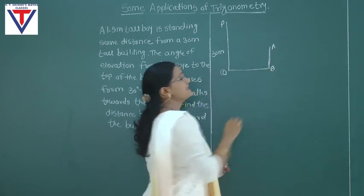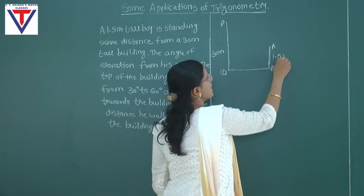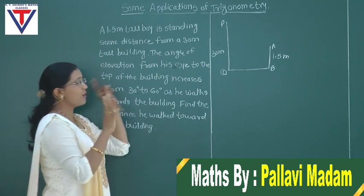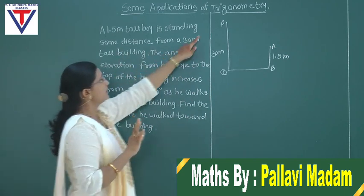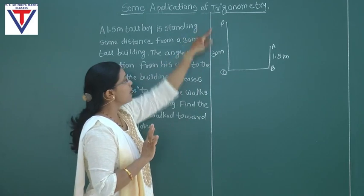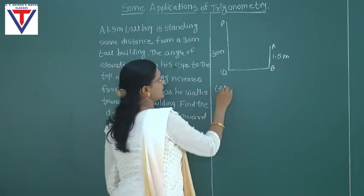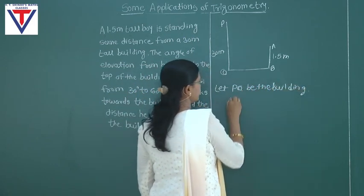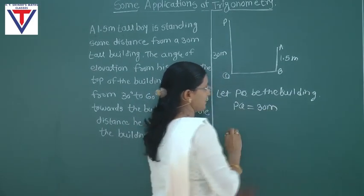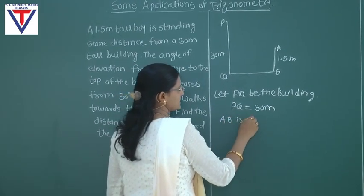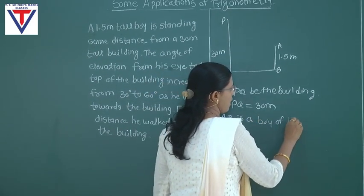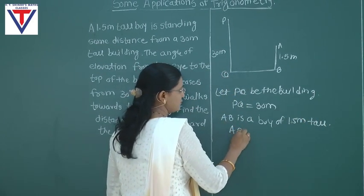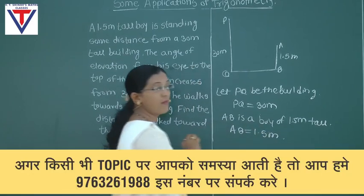So let's consider AB is the boy whose height is 1.5 meters. Let PQ be the building. PQ is equal to 30 meters. AB is the boy of 1.5 meters tall. So AB is equal to 1.5 meters.